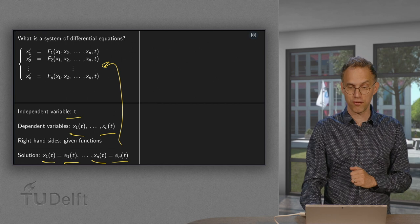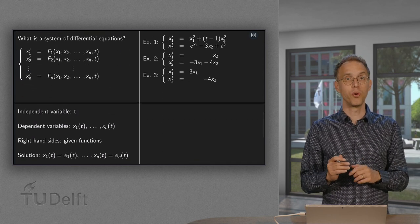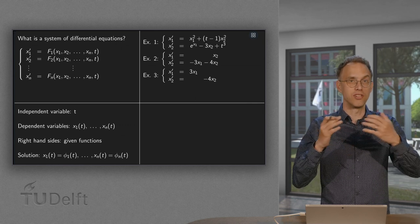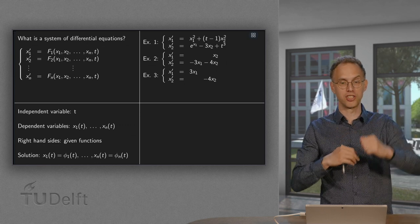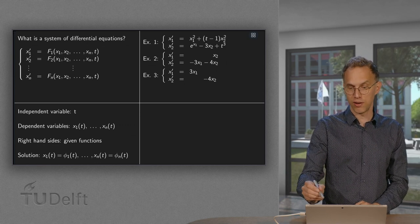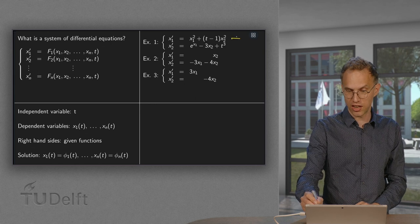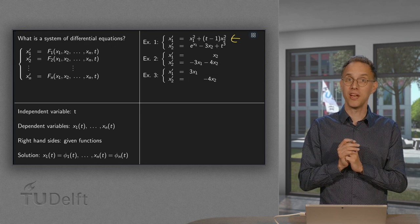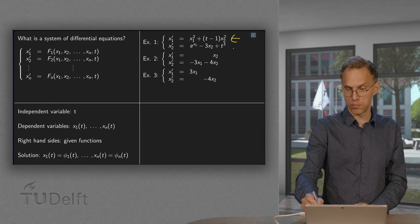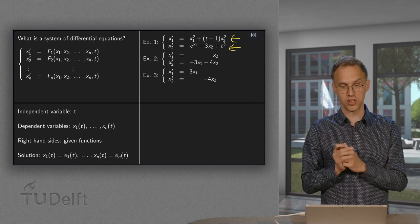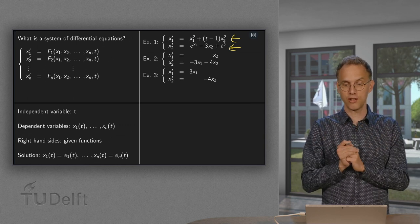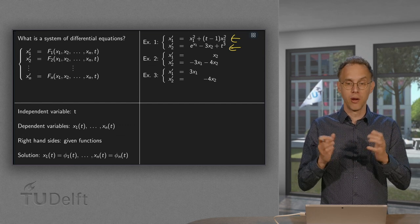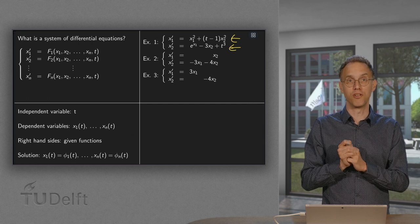Let us take a look at a few examples. In example one, we take n equals 2 — we will often take n equals 2, as it gives the general idea without producing very large systems. Here x1 prime equals x1 squared plus (t minus 1) times x2 squared — quite a messy right-hand side. And x2 prime equals e to the power x1 minus 3x2 plus t cubed. This is already too messy for us to solve.